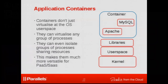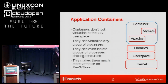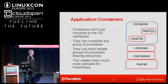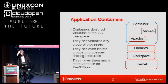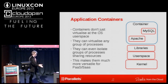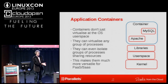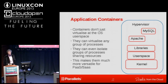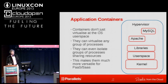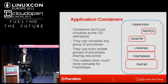Application containers share the kernel, user space, even the same libraries. Only the application itself - say Apache and MySQL - is placed inside the container, and you can run multiple copies in different containers on top. Containers can virtualize any group of processes, from a single application up to a full operating system. The containerization of a multi-tenant system is much more agile than wrapping everything inside a hypervisor, which is what makes containers more versatile for PaaS and SaaS environments.